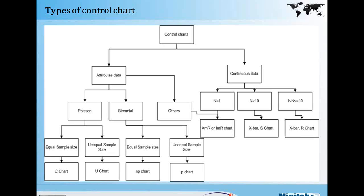In both the P-chart and NP-chart cases, we want to find out how many items — bulbs or glass panes — were defective. Whereas when we are more concerned about the count of defects, we use C-charts and U-charts. For C-chart we also use equal sample size, similar to the bulbs example — we want to find out how many defects those items have. In a Poisson distribution, we use C-chart and U-chart; in a binomial distribution, we use NP-chart and P-chart.